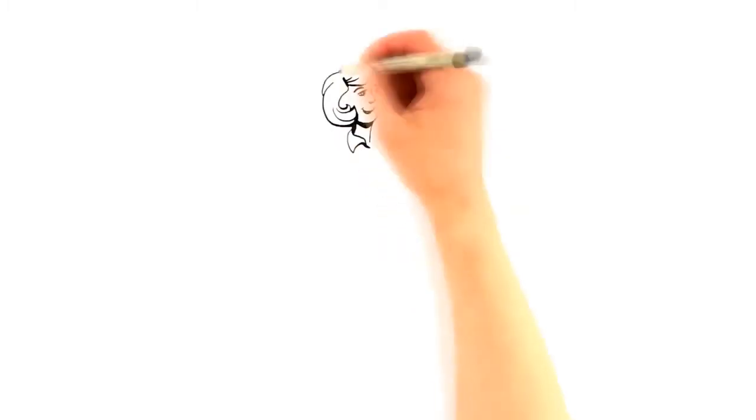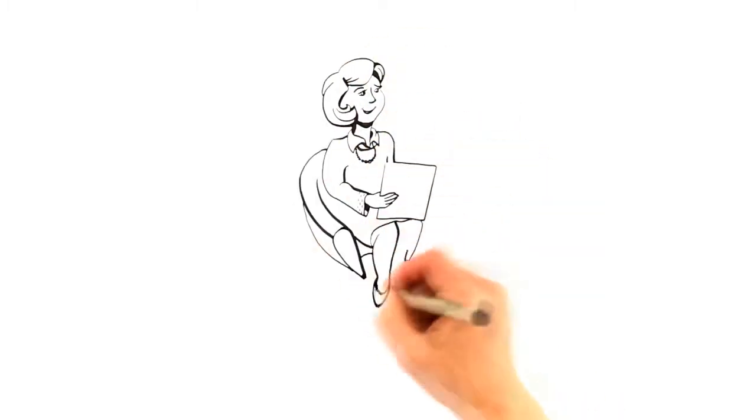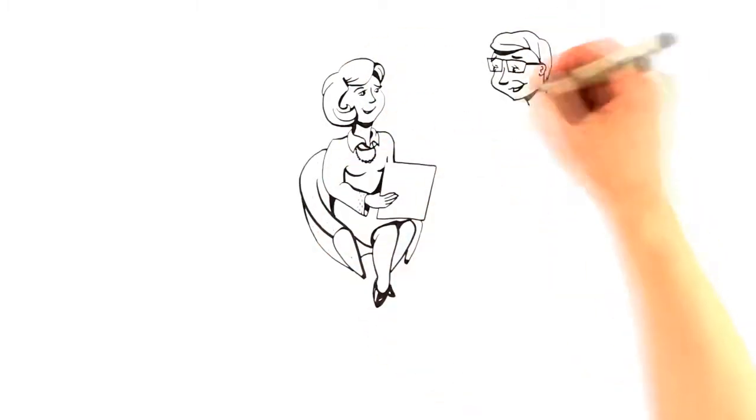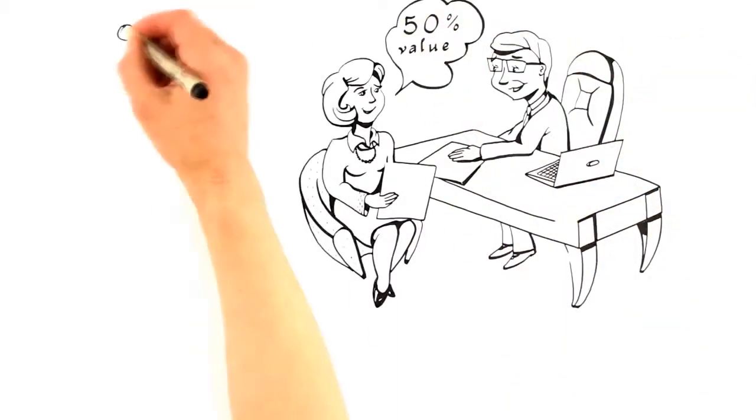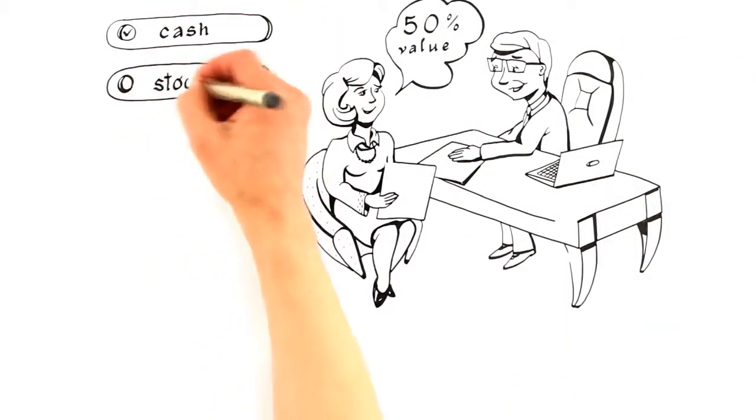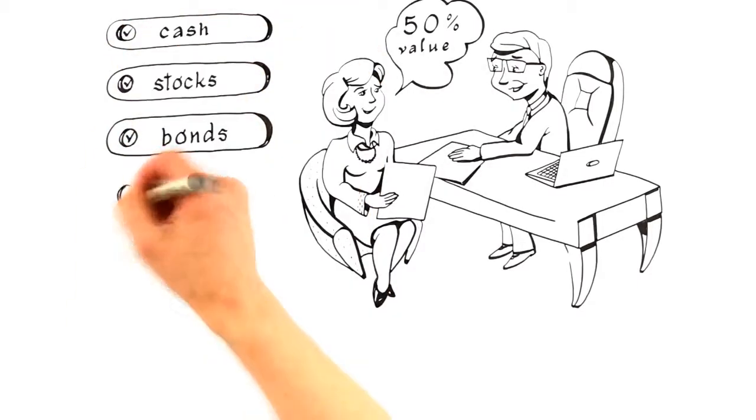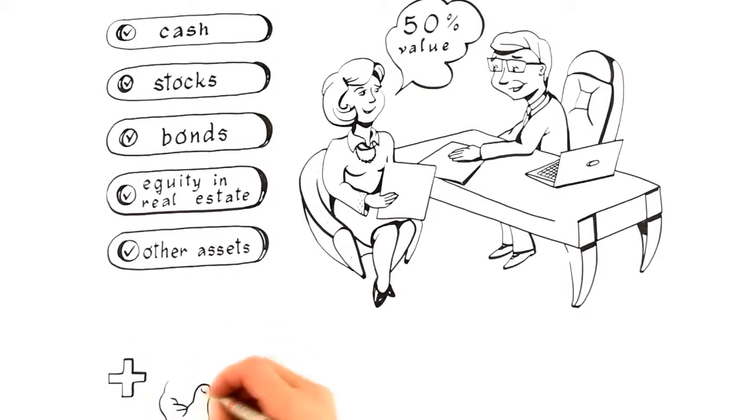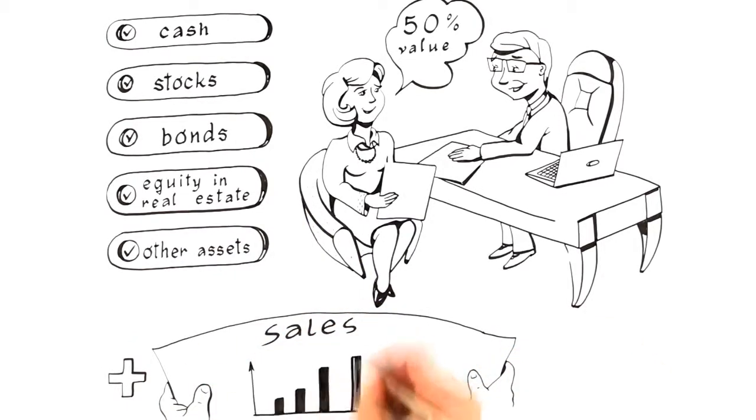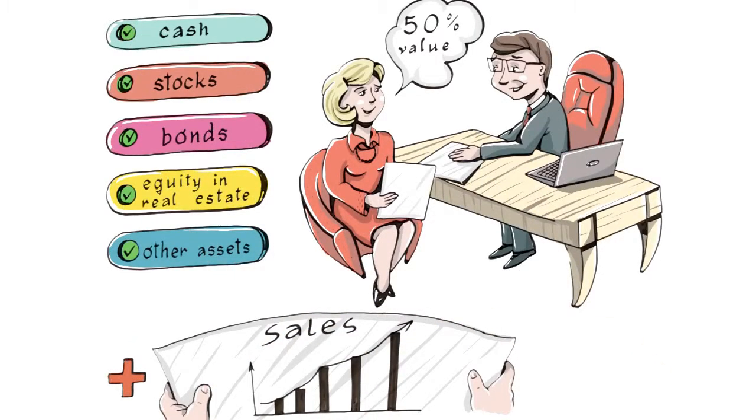To qualify for SBA-secured financing, you should have collateral equivalent to 50% of what you are borrowing. Most assets can be used as collateral, including cash, stocks, bonds, equity in commercial and residential real estate, and most other business assets. Your business will also need to show positive trends in sales growth reflected by your business tax returns.